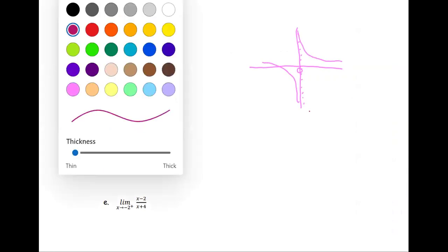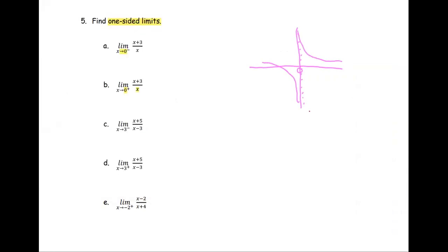So when we look at the one-sided limit as x approaches 0 from the left, the graph is going down to negative infinity. When x is approaching 0 from the right, the graph is going up to positive infinity.